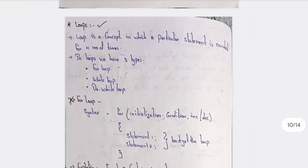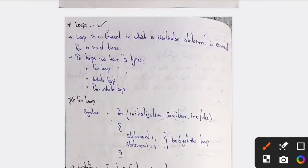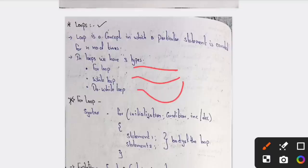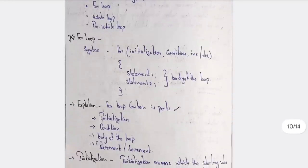What does a loop do? It is executed a number of times. If you want to execute anything a number of times, a looping statement will be used. You have for loop, while loop, and do-while loop. For loop you will have, while you will have, do-while you will have — for loop syntax and its formula.